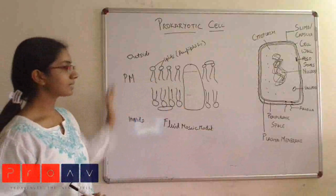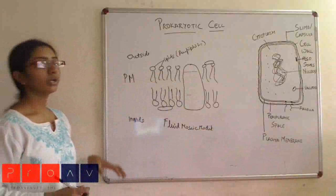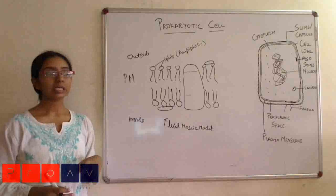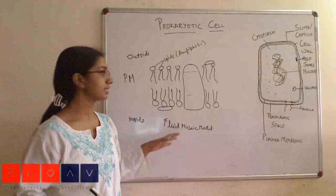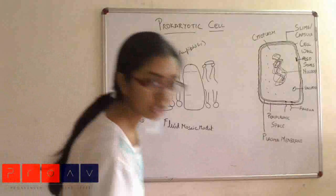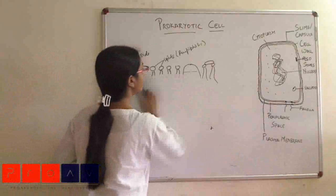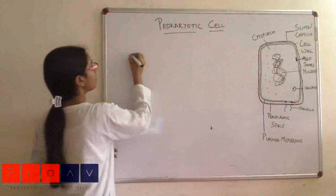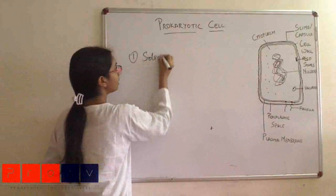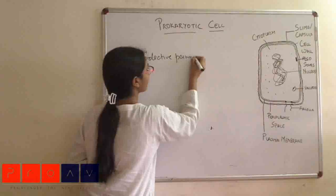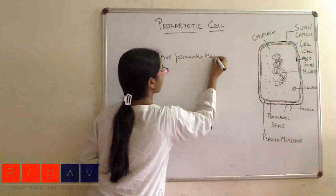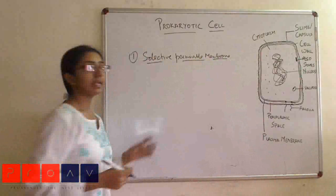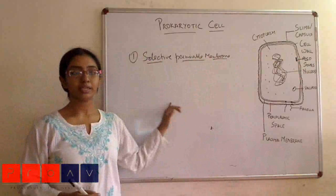In prokaryotic cells, the plasma membrane performs certain other functions which are not there in eukaryotic cells. The first function of the plasma membrane is providing a selectively permeable membrane barrier. It allows molecules in appropriate quantities that are needed by the cell to move in or out.